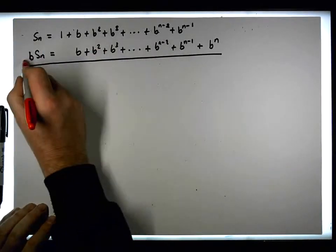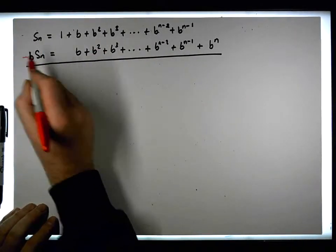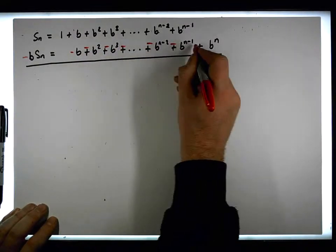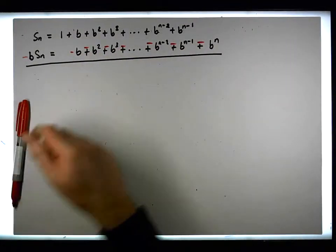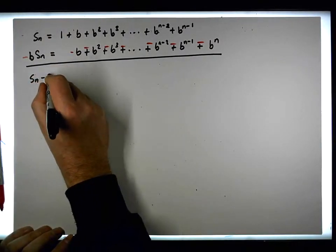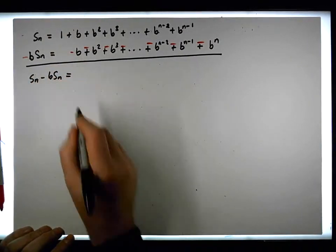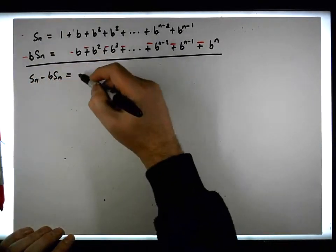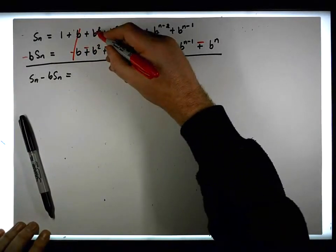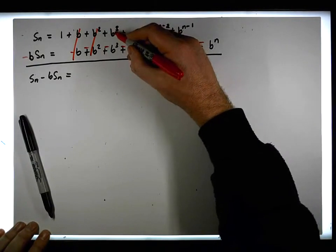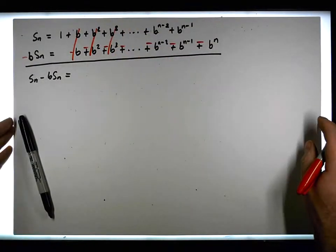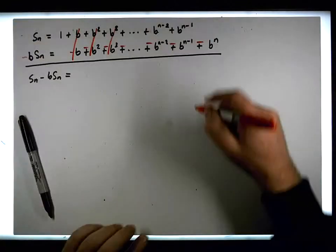We multiply this row by minus one, so all the signs flip to minus, and we add them together. We end up with Sn minus b times Sn. You can see that the terms cancel: the b and minus b cancel, the b squared and minus b squared cancels, the b cubed and minus b cubed cancels. This is like a method of differences, just laid out a little bit differently.